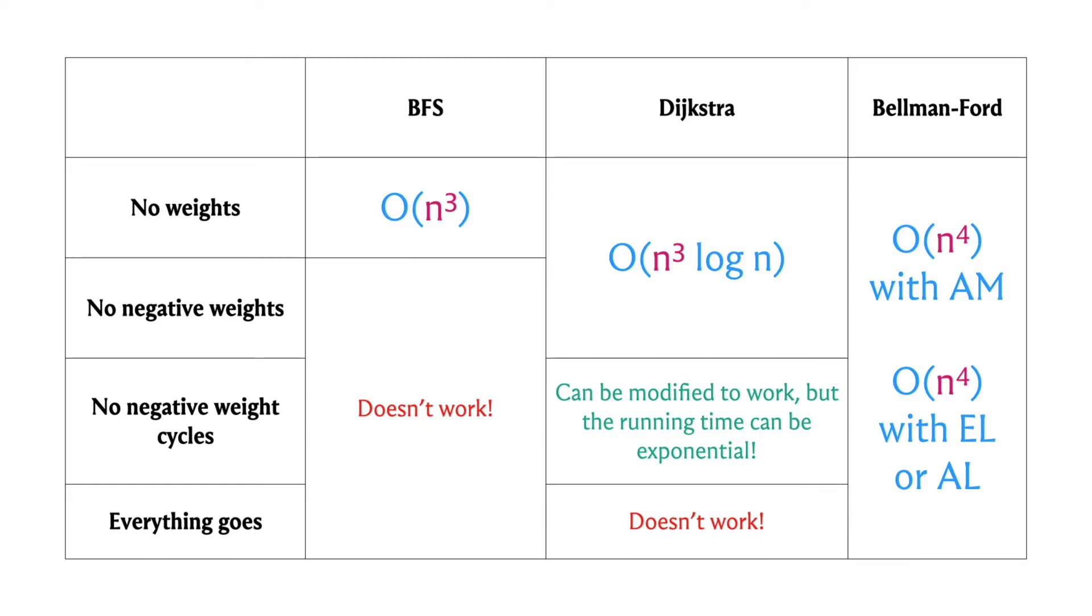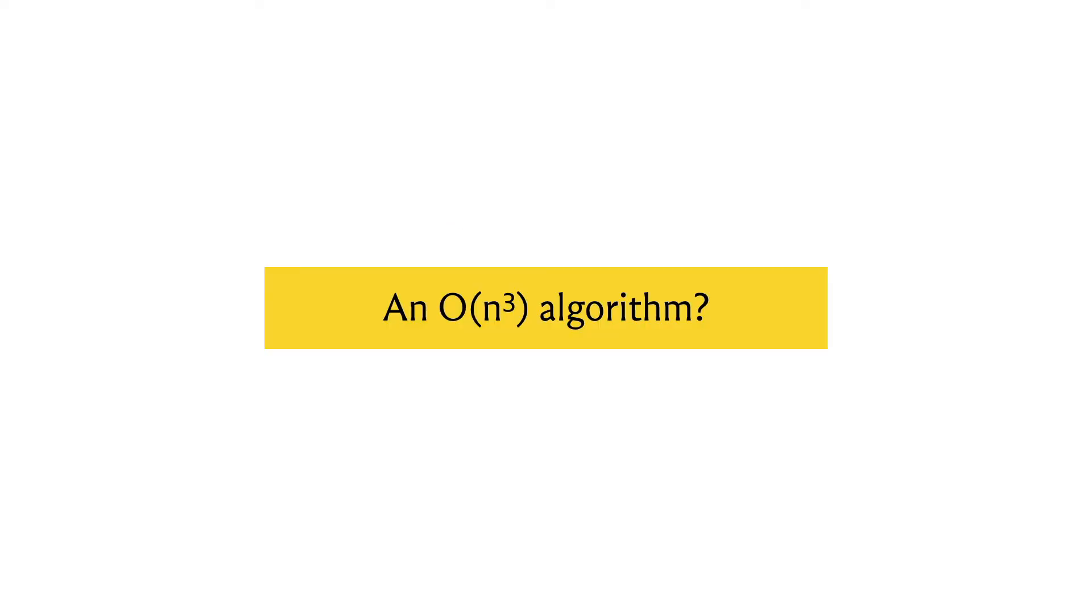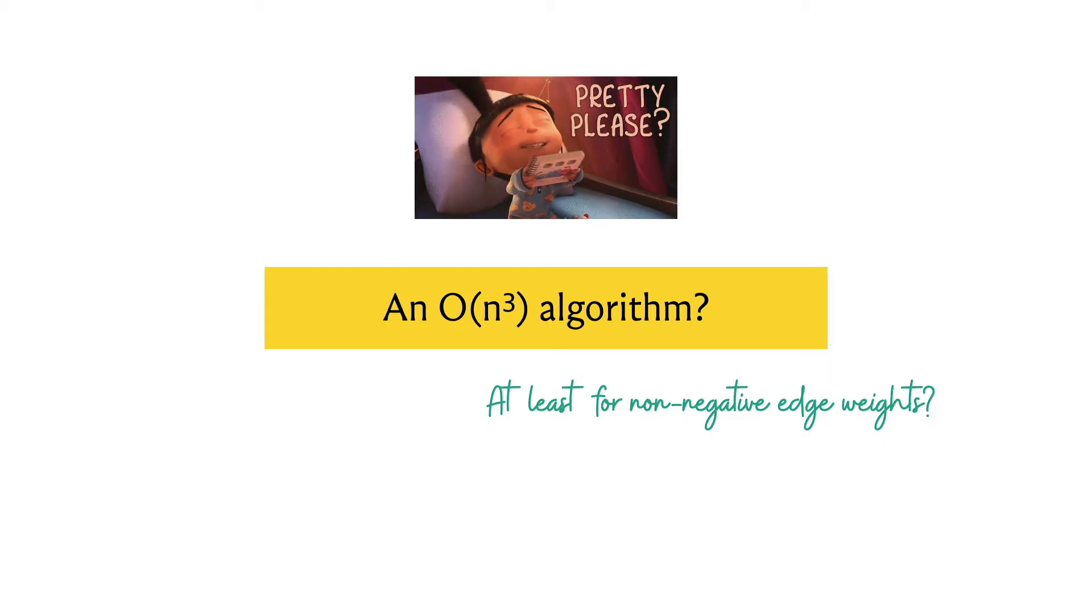So a natural question is if we can do all pairs shortest paths in order n cubed time without having to worry about the extra log n factor in the case of Dijkstra or the extra factor of n that comes in Bellman-Ford. Perhaps we can figure this out for non-negative edge weights, getting an improvement over Dijkstra. What we are going to see, we will describe it in the context of graphs that don't have negative edge weights, but you can adapt it—and I think it's a good exercise—to also account for negative weight cycles.